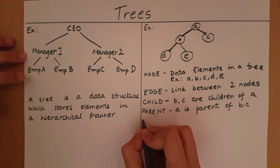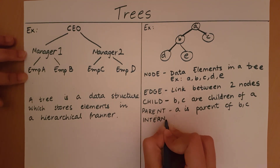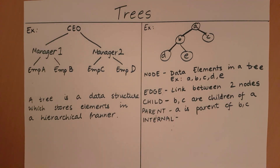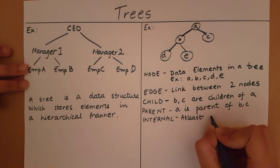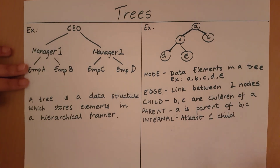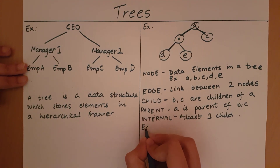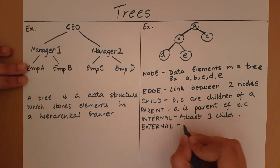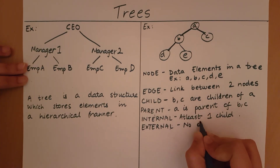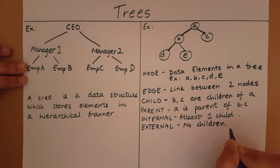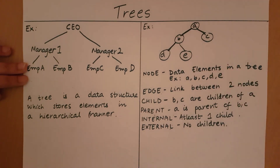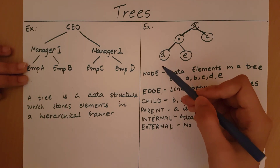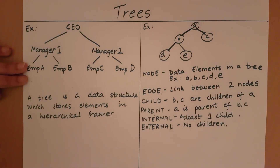Now let's look at what an internal node is. An internal node is going to be a node which has at least one child. An external node is going to be a node which has no children. So in our tree: A has two children, so it's an internal node; B has two children, so it's an internal node; D has no children, so it's an external node; E and C also have no children, so they are external nodes.